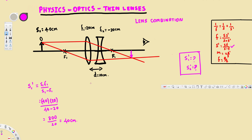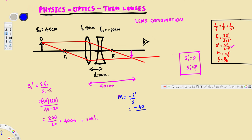The image forms 40 centimeters from the converging lens. Since we get a positive answer, this is a real image. The magnification is m equals negative s prime over s, which is negative 40 divided by 40, giving us negative one. This means the image is inverted and exactly the same size as the object.